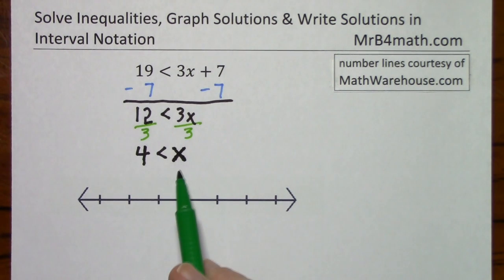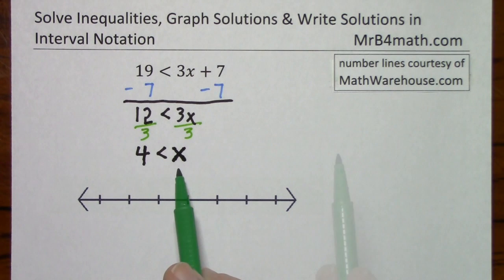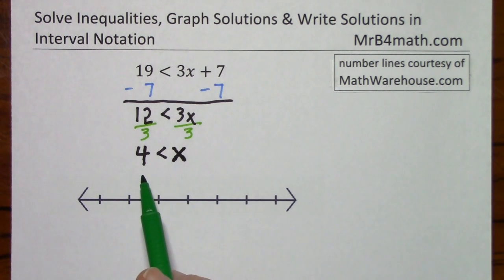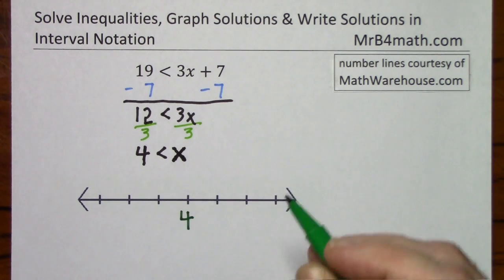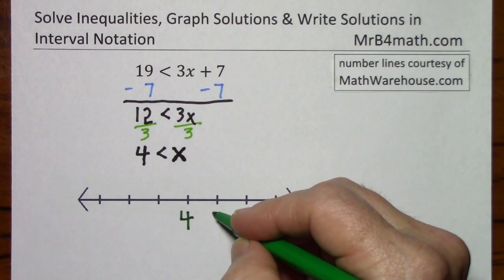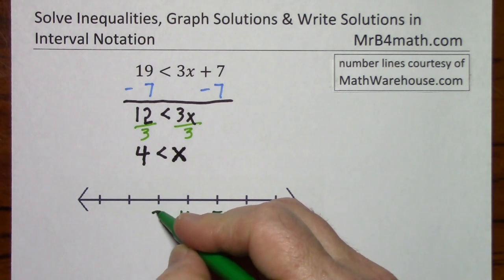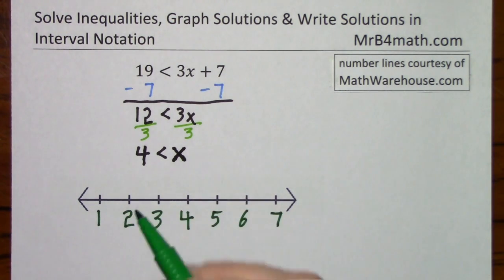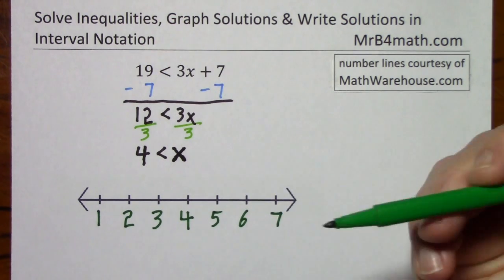Hopefully this helps illustrate why it's helpful to read from the variable when dealing with inequalities — x can be any value that is greater than 4. Since the first number we're concerned with is 4, I'll put 4 in the middle, with bigger numbers to the right and smaller numbers to the left. If the number line kept going, I could go 0, negative 1, negative 2, etc., but this is fine to illustrate all the values x could be.